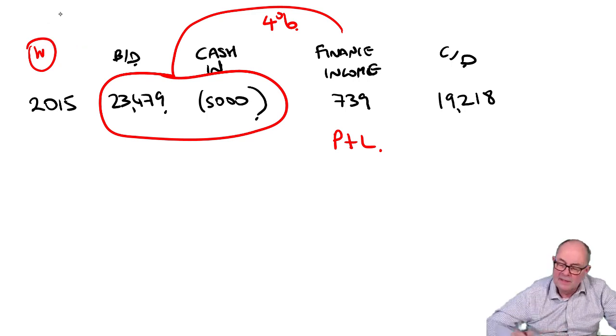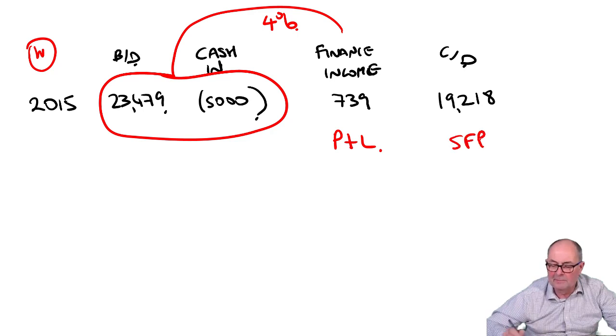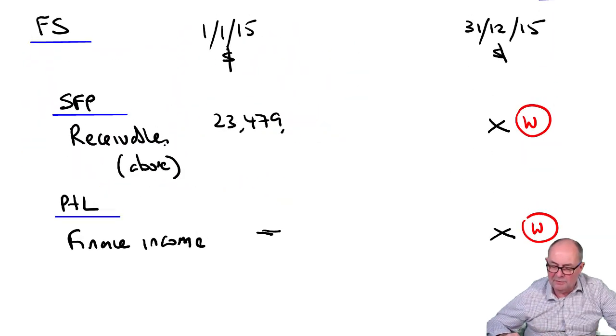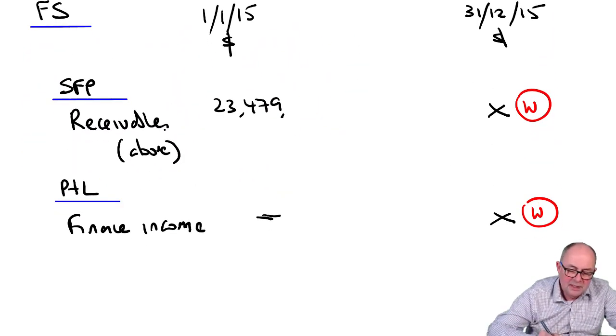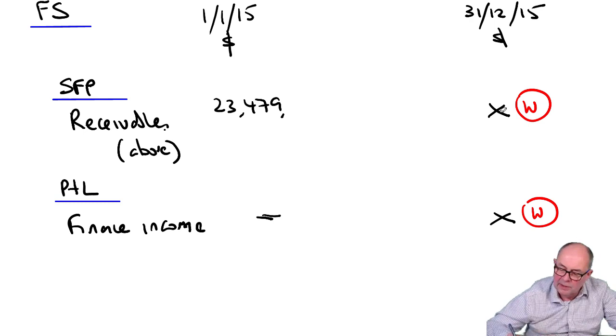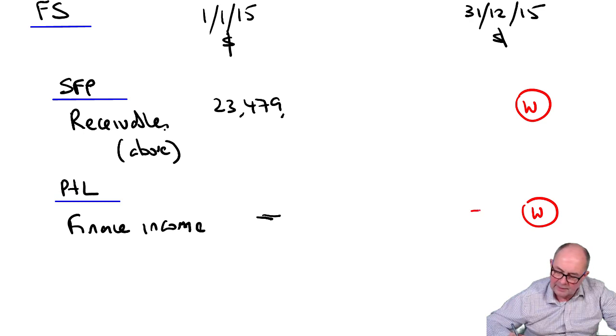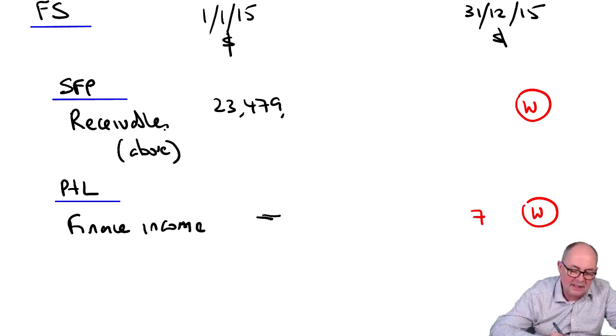So, 739 will be in the profit and loss. That's the finance income.